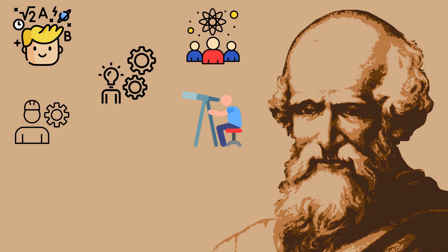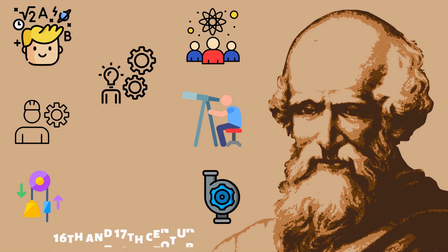Archimedes was a practical man who invented many machines, such as pulleys and the Archimedean screw-pumping device. His work inspired scientists in the 16th and 17th century.